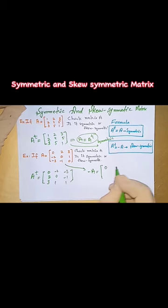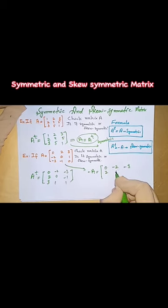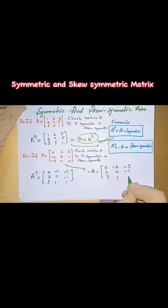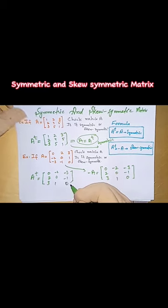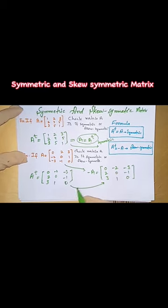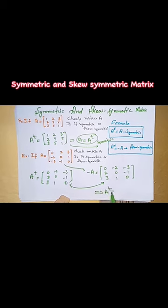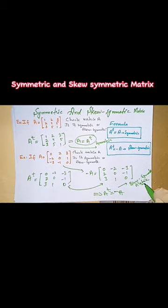So here: zero, minus two, minus three, two, zero, minus one, three, zero, zero to zero. This implies A transpose is equal to minus A, so the given matrix is a skew-symmetric matrix.